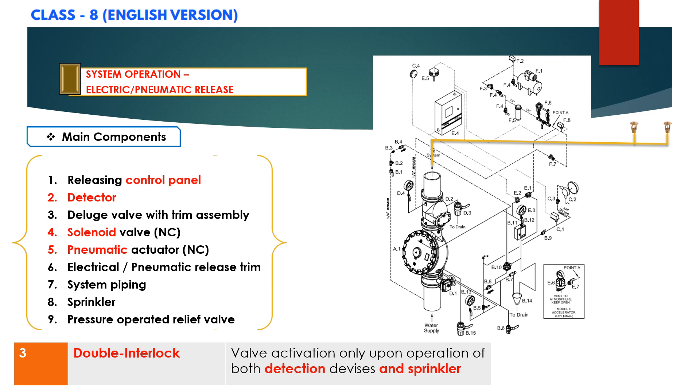When the deluge valve A1 operates, then the sensing end of the PORV B10 is pressurized causing the PORV to operate, and the water will flow through the PORV to the drain.